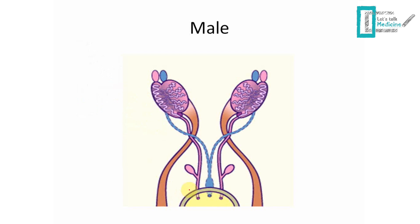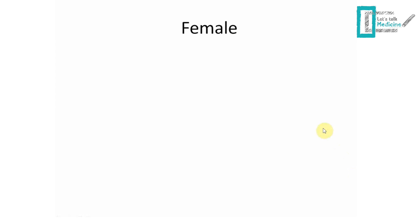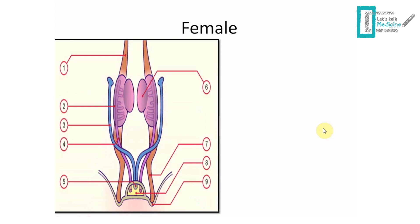You can imagine how it looks after migration: the seminal vesicles are attached to the vas deferens, which follows the epididymis, which is attached to the testes that migrated downward. The vas deferens goes up and down following the testes — this mirrors the normal anatomy of the male reproductive tract.